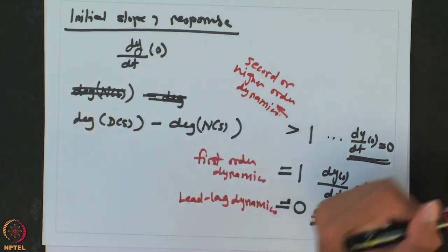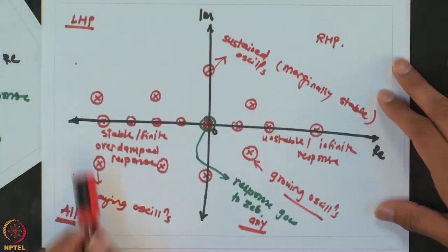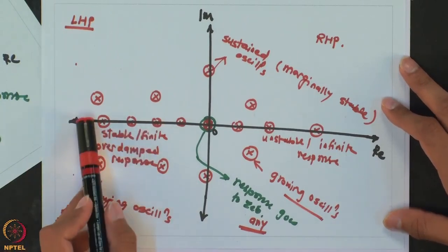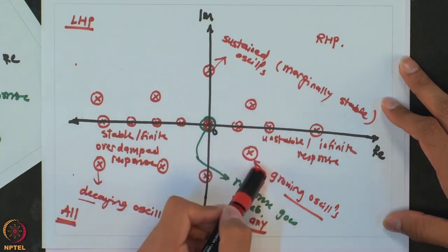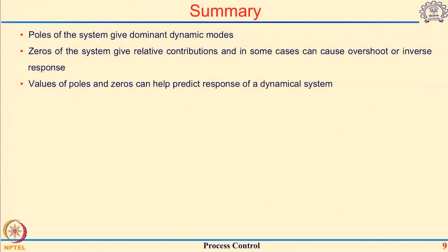So by knowing the initial slope, looking at whether you have overshoot or inverse response from the zeros, and combining it with whether you have stable, overdamped, decaying, or growing oscillation behavior from the poles — you would be able to predict the response of any transfer function for a step change. To summarize: poles give the dominant dynamic modes; zeros give relative contributions and indicate conditions for overshoot or inverse response; and together, poles and zeros help you predict the response of any dynamical system.